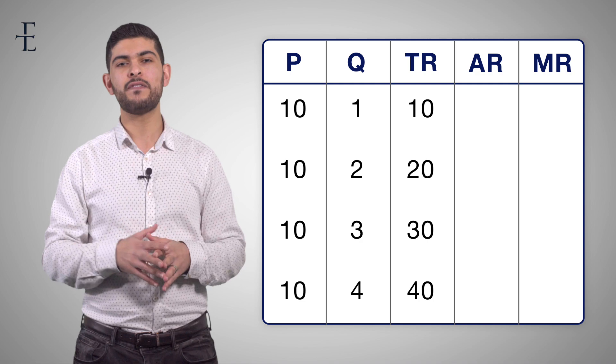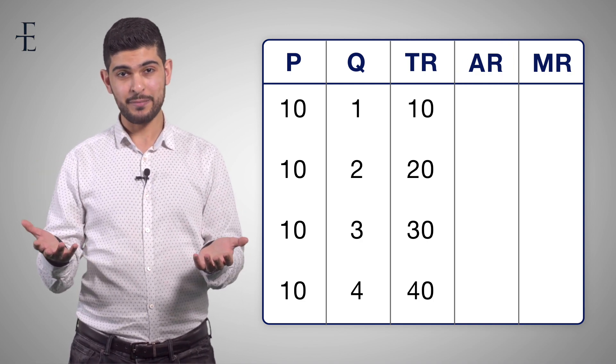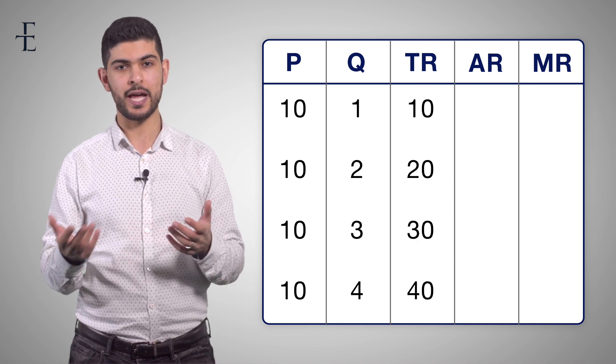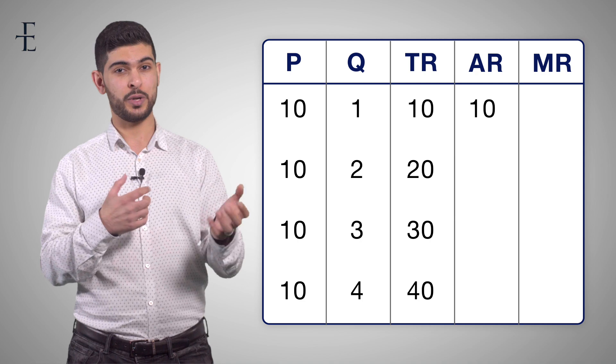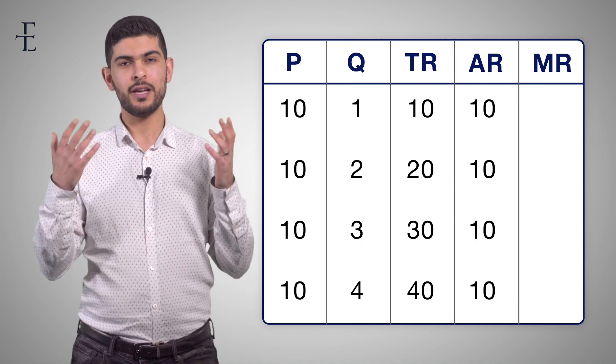Now, by yourself, fill out average revenue. Very, very basic maths again. Total revenue divided by quantity gives us the average revenue. So we get 10 divided by 1, 10. 20 divided by 2, 10. 30 divided by 3, get the idea. Can you see a pattern?